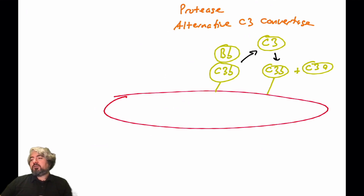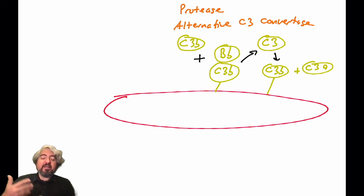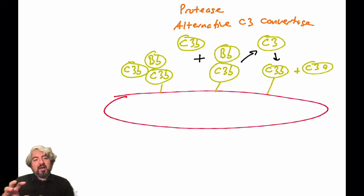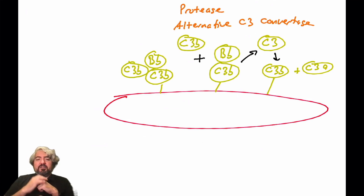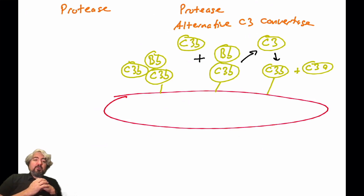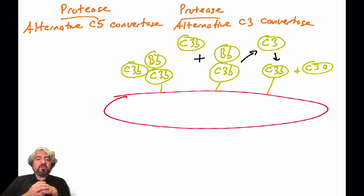Now I'm going to describe something else that can happen when the alternative C3 convertase cleaves C3 into C3a and C3b. The C3b can actually bind and stick to the alternative C3 convertase itself, instead of fixing to the surface of the pathogen on its own. So now we have a three-protein complex stuck on the surface of the pathogen, made of two C3bs and Bb. This complex is a different protease — we call it the alternative C5 convertase.